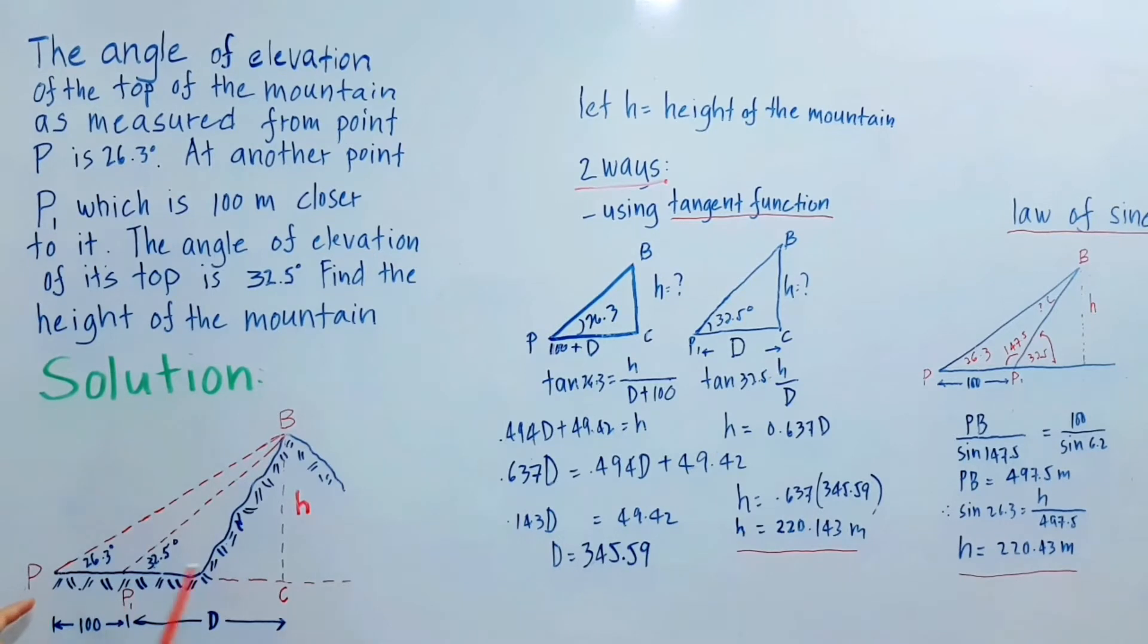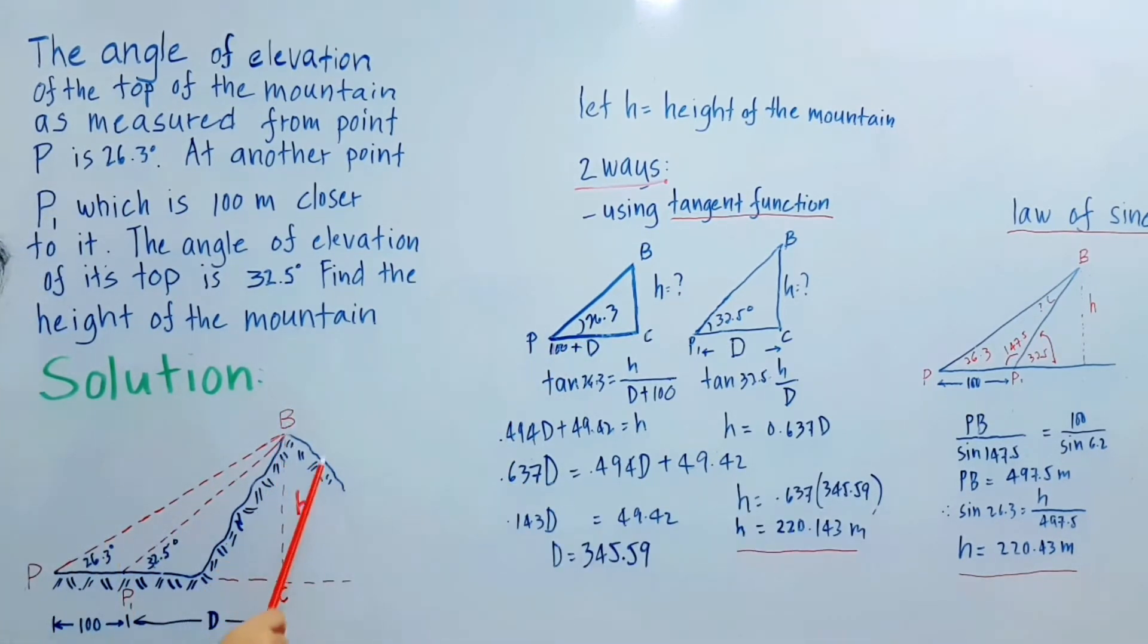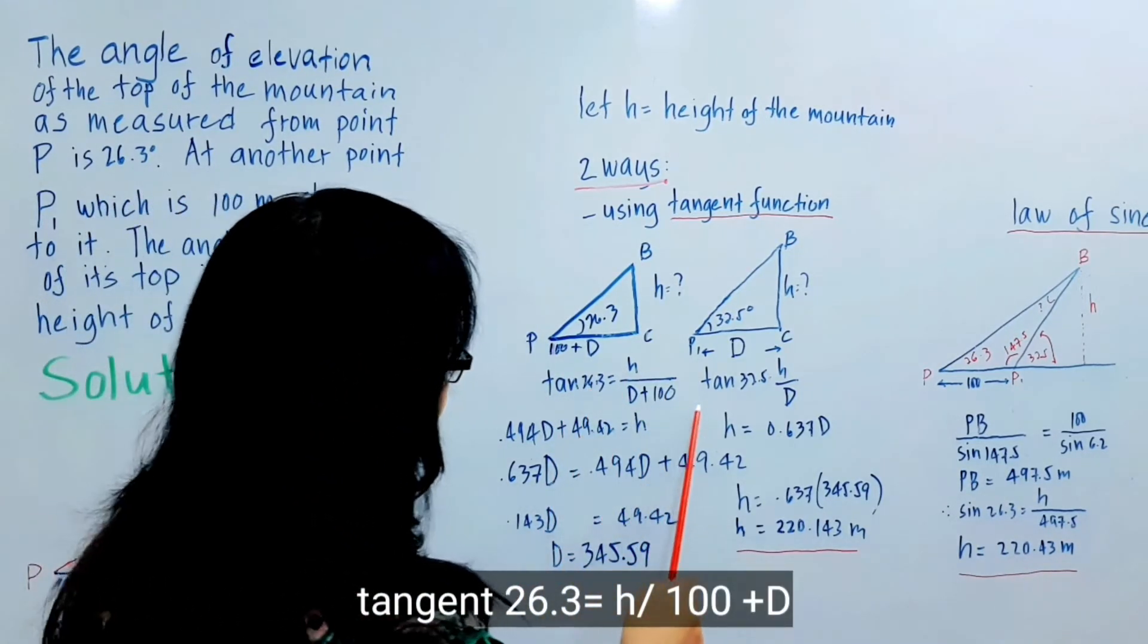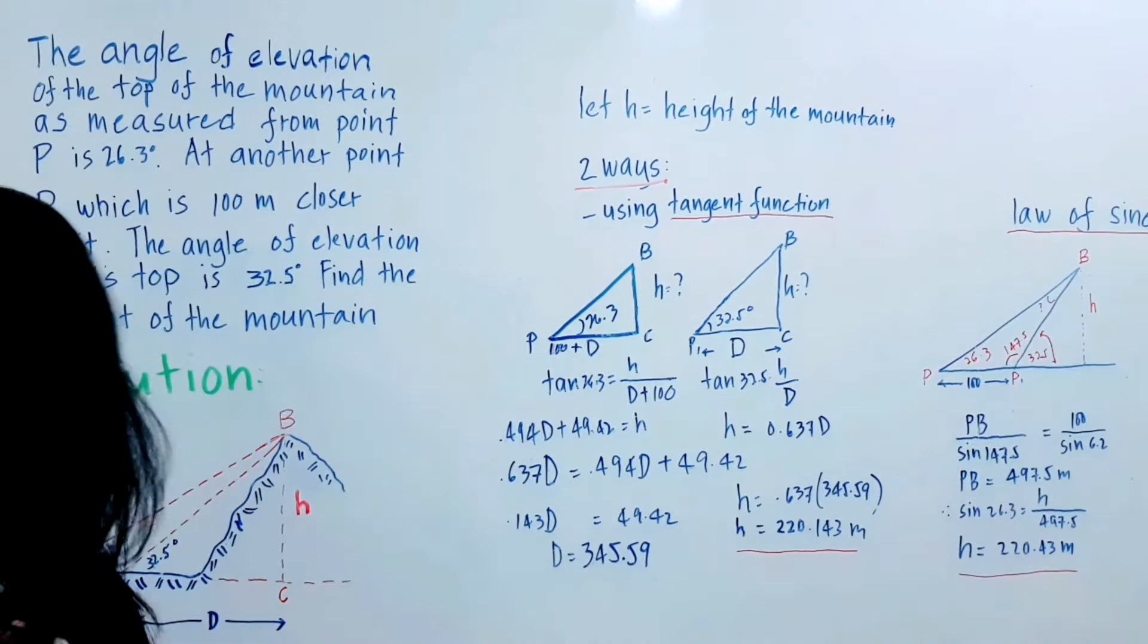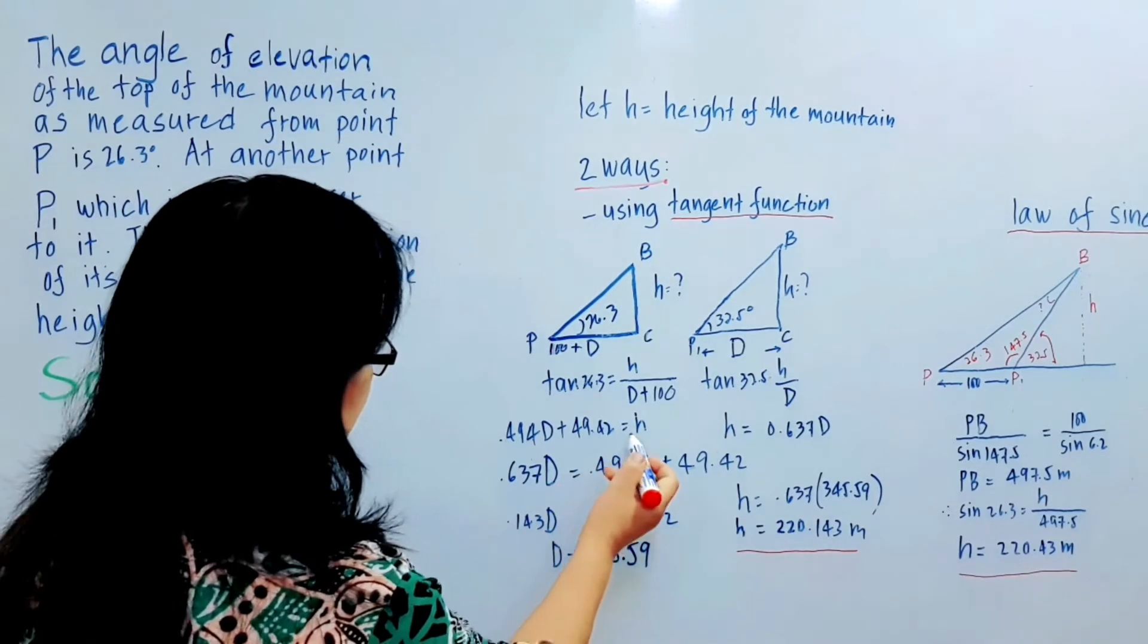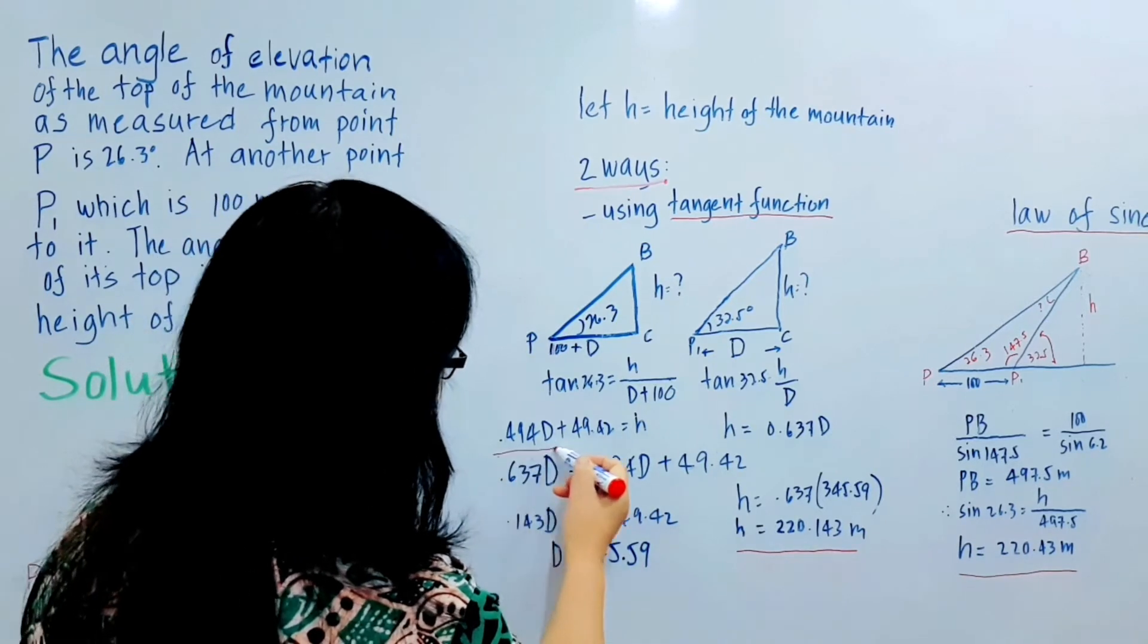Now if we use tangent, tangent of 26.3 will be equal to the opposite, which is the height, over the adjacent, which is 100 plus D. So tangent 26.3 equals H over D plus 100. Simplifying it, H will be equal to 0.494D plus 49.42.